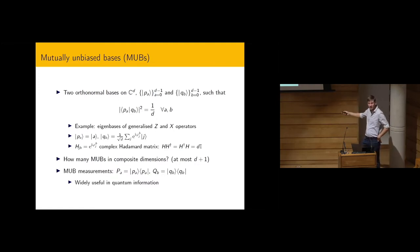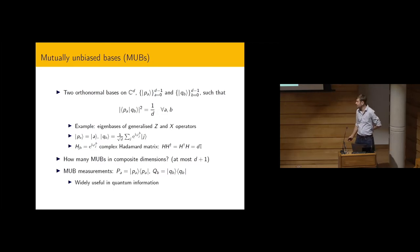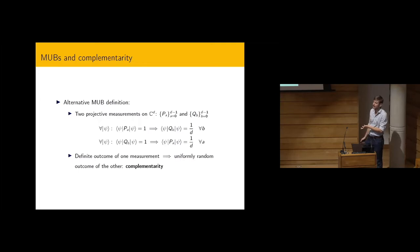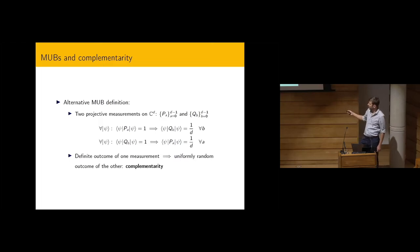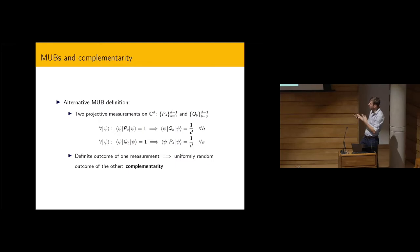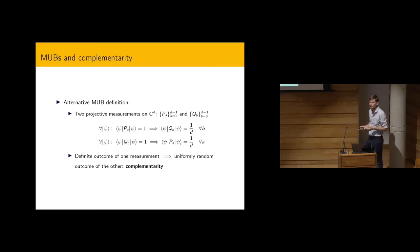MUBs are nice and symmetric, and people also use them in quantum information. The corresponding measurements — projections onto these bases — are widely useful. You find them in Bell inequalities, quantum communication, state determination, and more. The reason they're useful is because of the complementarity property: if you have a state that gives a definite outcome on one measurement, the other measurement will give a completely uniform output, and vice versa.